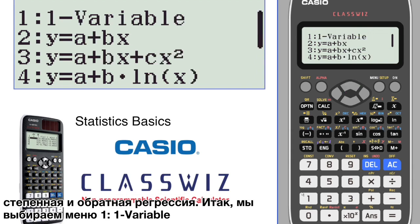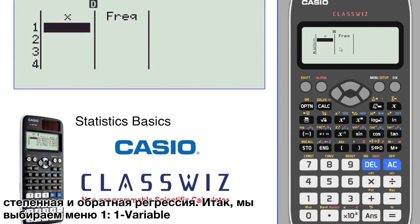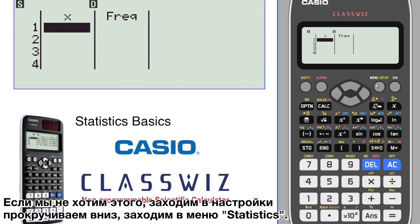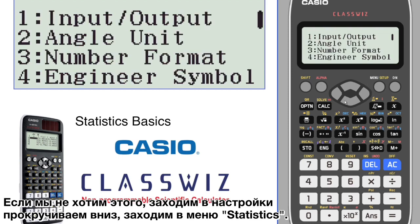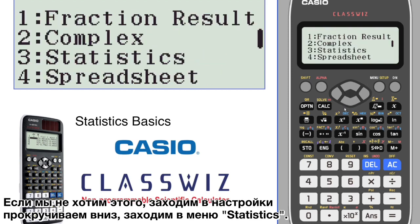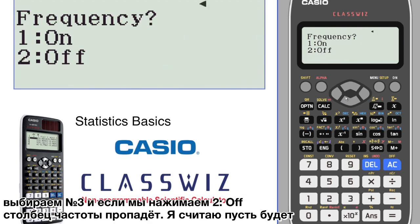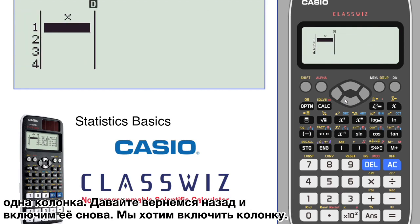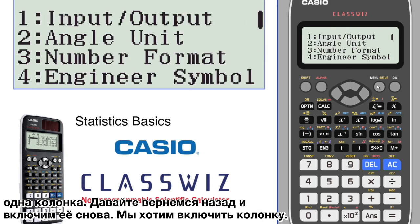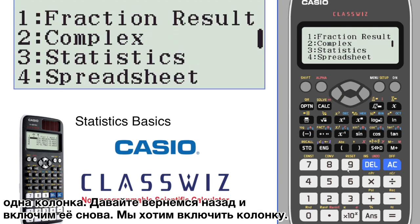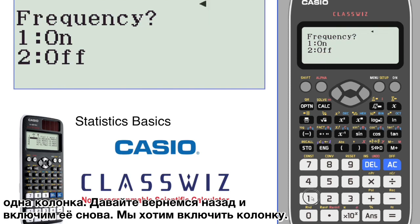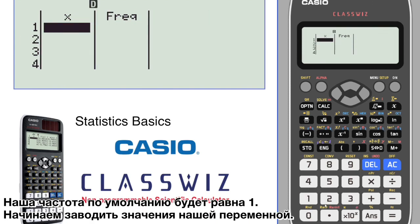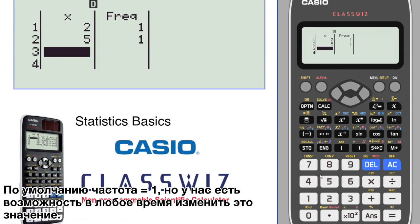So we're going to go ahead and choose one. Notice that our frequencies are turned on. If we want to change that, go into your setup, toggle down, do stats which is number three. If we turn it off, your frequencies are gone and are assumed to be one. Let's go back and turn those back on. Our frequency is going to default to one, so when we start entering our data it defaults to one, but we'll be able to change that at any time.